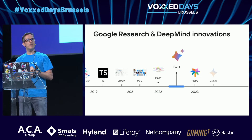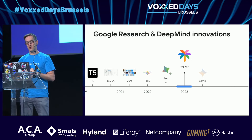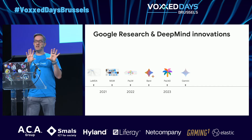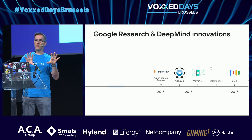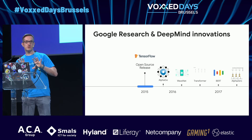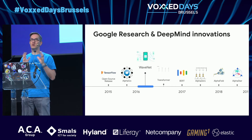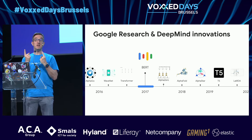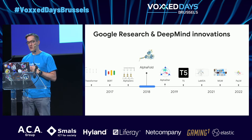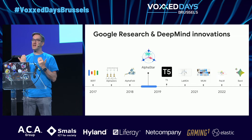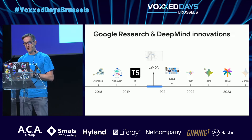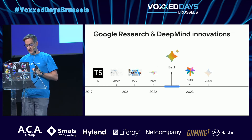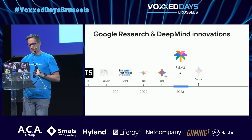The name Gemini comes from the fact that internally we had two research groups — Google Research and Google DeepMind — that merged together. They were kind of like Geminis within Google, as they were working in parallel on large language models. That's where the name came from.